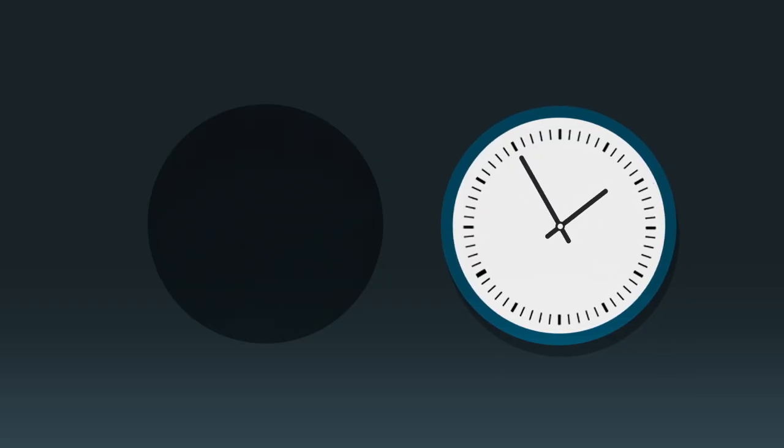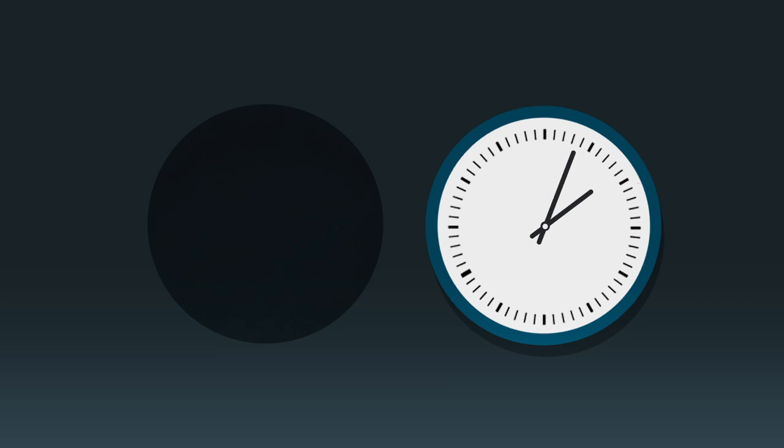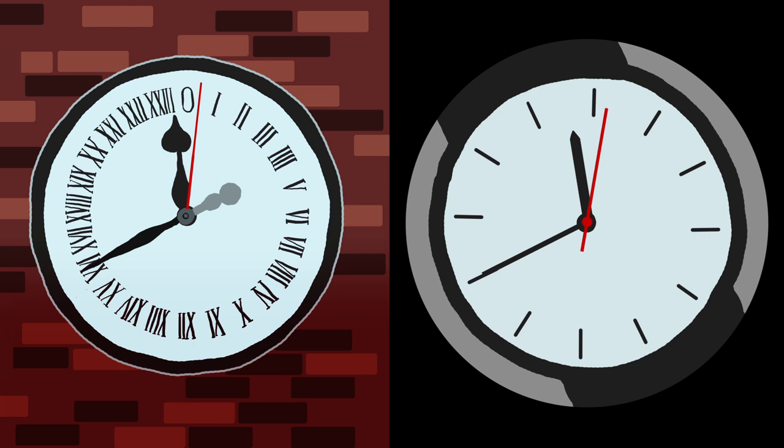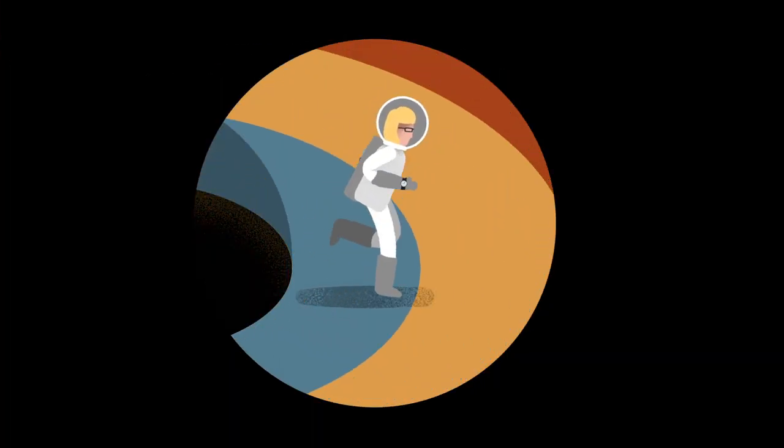Also, the strong gravitational field would slow down time. If we could see Liz's watch from our perspective here on Earth, it would appear to us to tick a lot slower than our watches, although time for her would pass by normally.